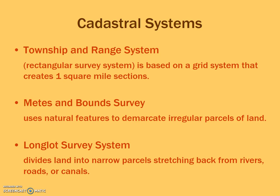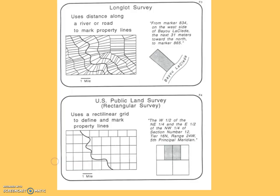One other type of cadastral system you'll see a lot, especially in former French territories like Louisiana, but also in the maritime provinces of Canada, is the long lot survey system. This is usually trying to give everyone access to the river, so they may be more agriculturally based where they need water for irrigation or for transporting goods.